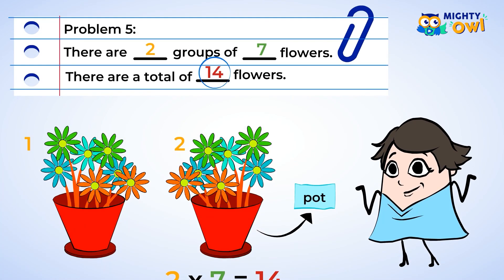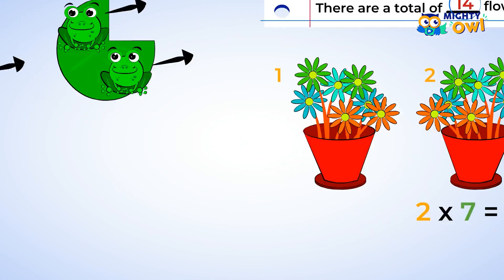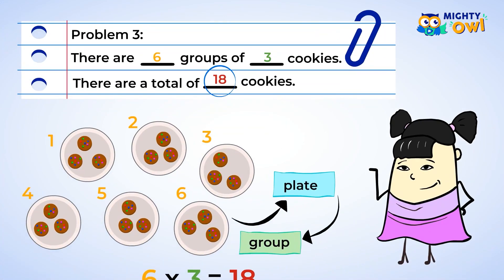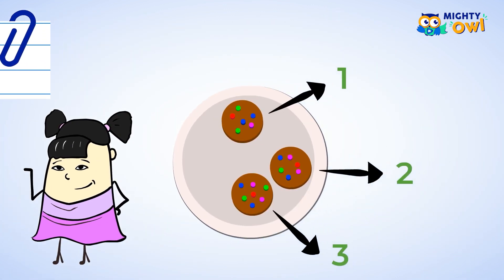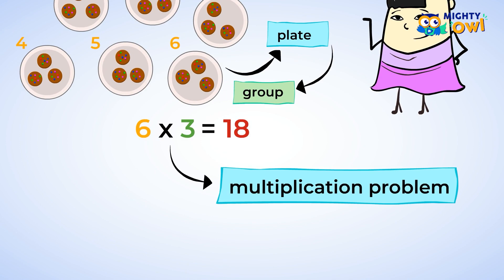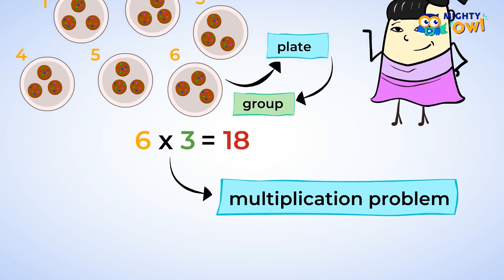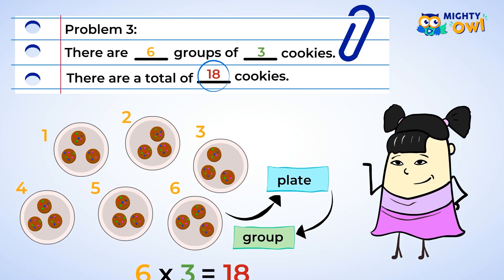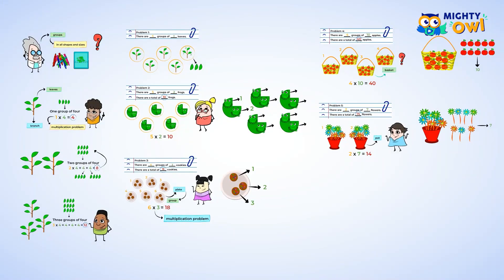Great work! To sum up, you have been working on multiplication with groups. By finding the number of groups and how many items are in the group, you are able to turn words into multiplication problems. What a great job you did solving them to find the total number of objects. You learned a lot! See you next lesson!